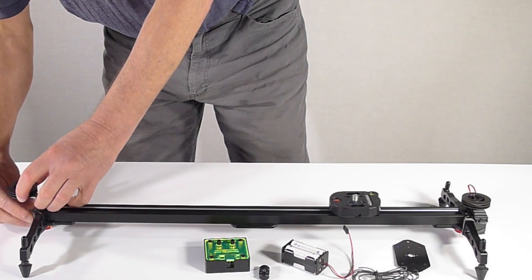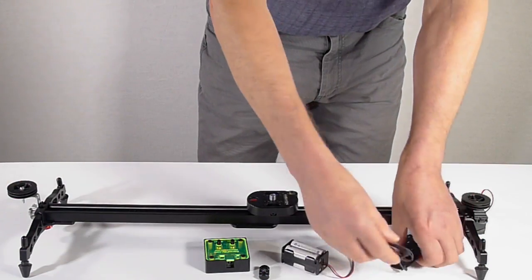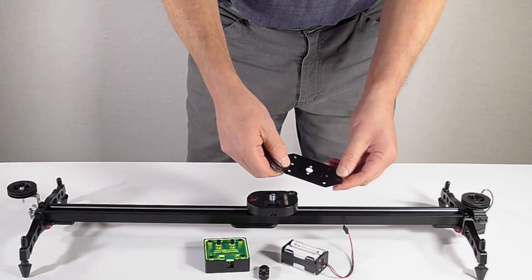On the SlideCam Lite, both the pulleys are now lined up perfectly with the central axis of the rail both horizontally and vertically.